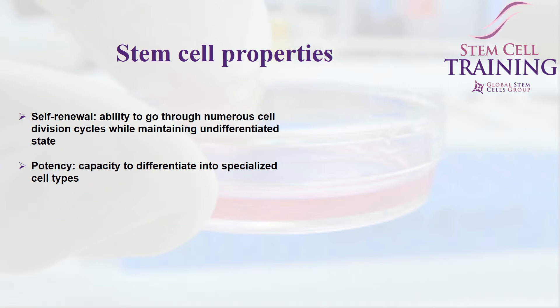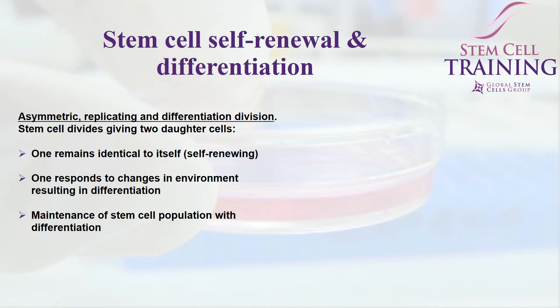There are two main properties that make up stem cells. The first is the ability of the cells to make copies of themselves — this is called self-renewal. They can go through numerous cell division cycles while maintaining an undifferentiated state. They also exhibit potency: the ability to develop into specialized cell types and tissues. In asymmetric replicating and differentiation division, the stem cell divides giving rise to two daughter cells: one will remain identical to itself, and one responds to changes in environment, resulting in differentiation. Therefore, there are both maintenance of the stem cell population and differentiation.